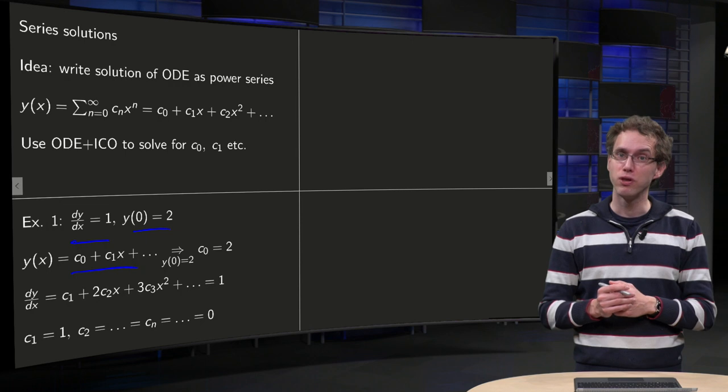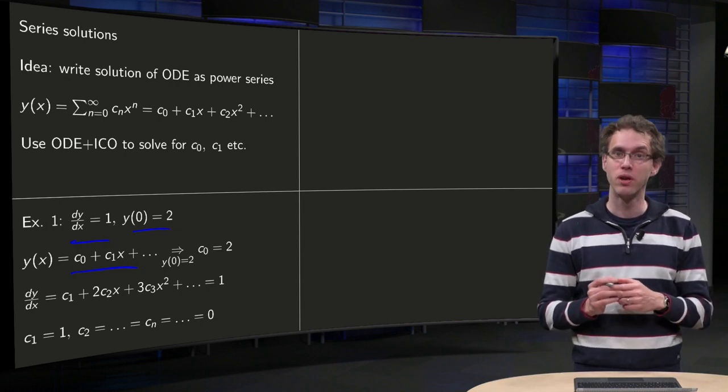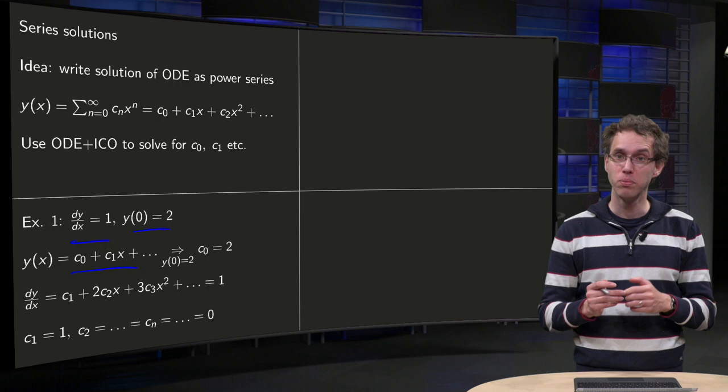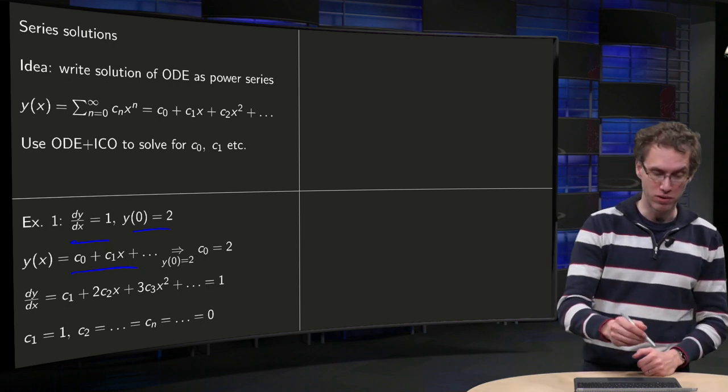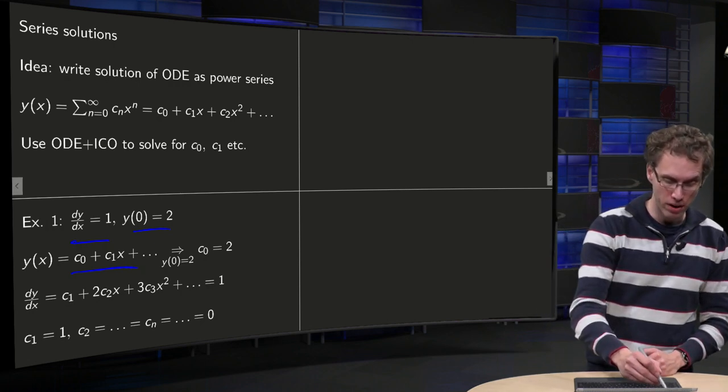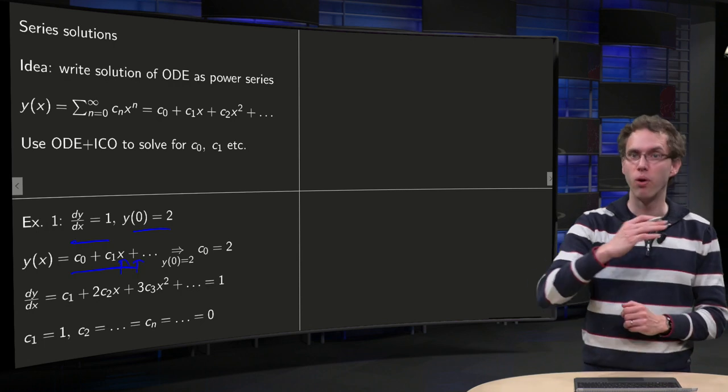Now first using the initial condition, y(0) equals 2, we find c0 equals 2. Because if we plug in x equals 0, all the higher order terms here, they all cancel out. They are all zero and we are only left with c0,